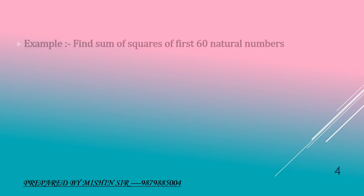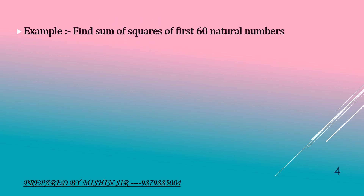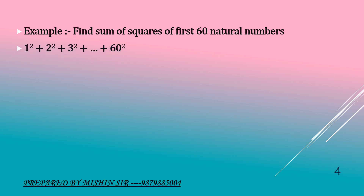Example: find the sum of squares of the first 60 natural numbers. That is, 1 squared plus 2 squared plus 3 squared plus dot dot dot plus 60 squared. Here, n will be equal to 60.